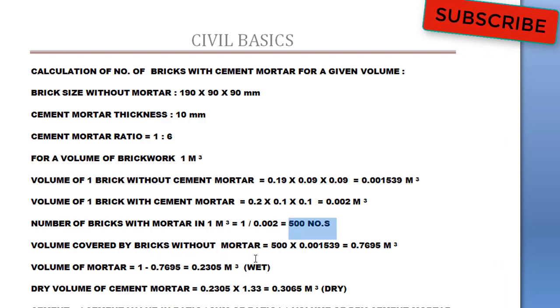Now, volume covered by bricks without mortar. In this 500, we have cement mortar and bricks. But we want only volume covered by bricks. So we'll multiply the volume of single brick without cement mortar by 500. So we'll get this value 0.7695 cubic meter. In one cubic meter, we have 0.7695 cubic meter volume of bricks. And remaining value will be our cement mortar. So, volume of mortar is 1 minus 0.7695 cubic meter. We are getting 0.2305 cubic meter as our wet cement mortar volume.